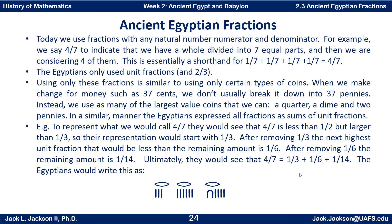Today we use fractions with any natural number numerator and denominator. For example, we might say four-sevenths to indicate that we have a whole divided into seven equal parts and are considering four of them. Notice that this is essentially a shorthand for one-seventh plus one-seventh plus one-seventh plus one-seventh, which equals four-sevenths. Egyptians only used unit fractions and two-thirds.